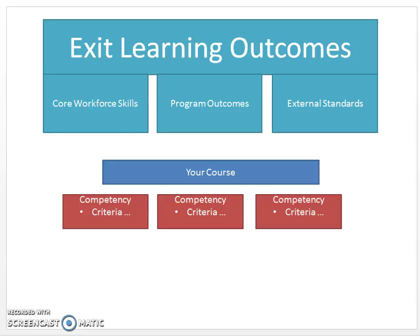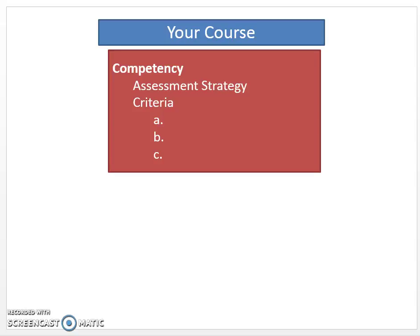In our last lesson we learned about exit learning outcomes and the three slices of pie and how they trickled down into our course into competencies. Here within our course we take that competency, build an assessment strategy for it, and we grade the assessment. We say they have either met or not met the competency, or they have earned an A or an F on the competency, and that grading happens via criteria.